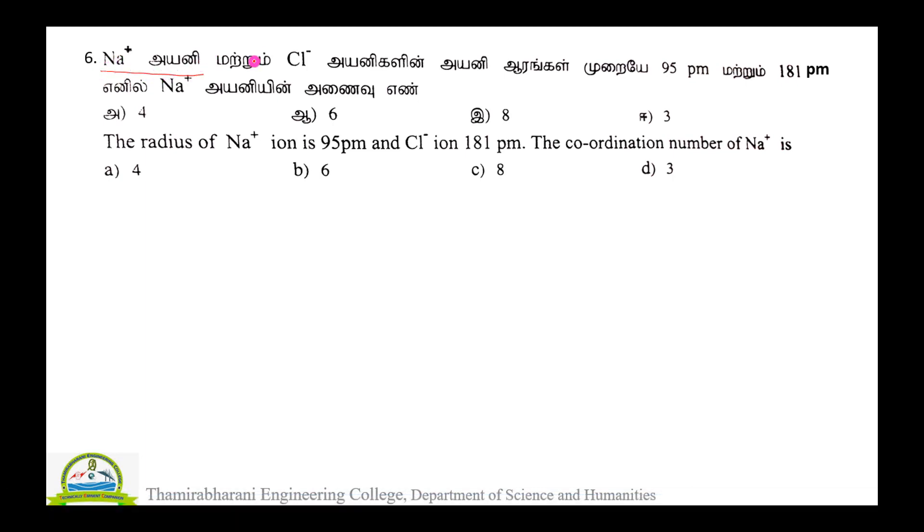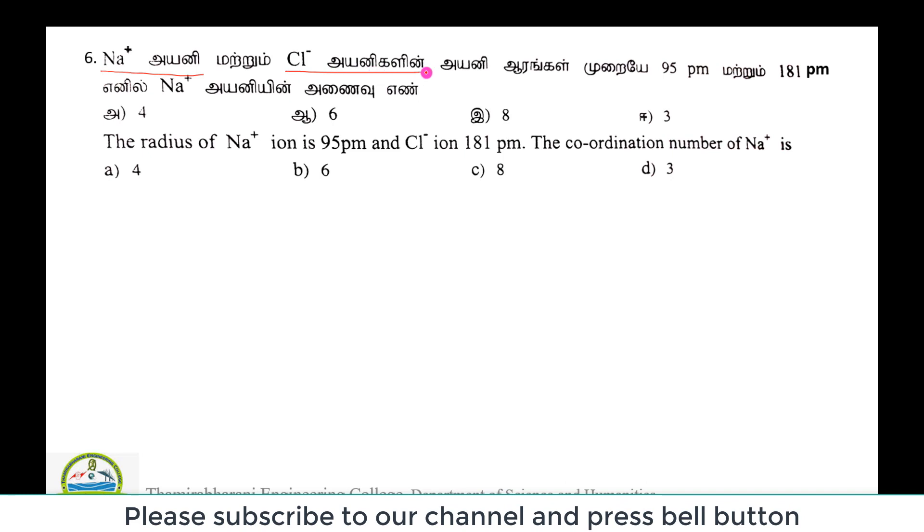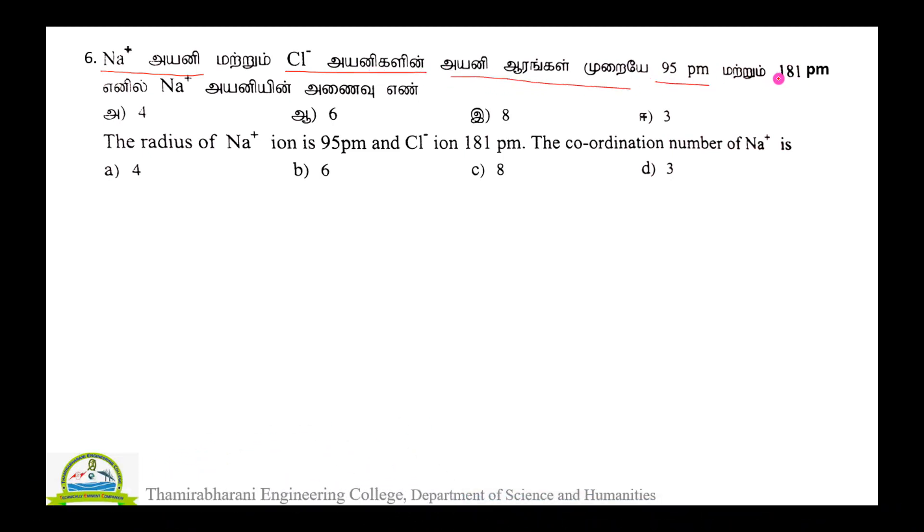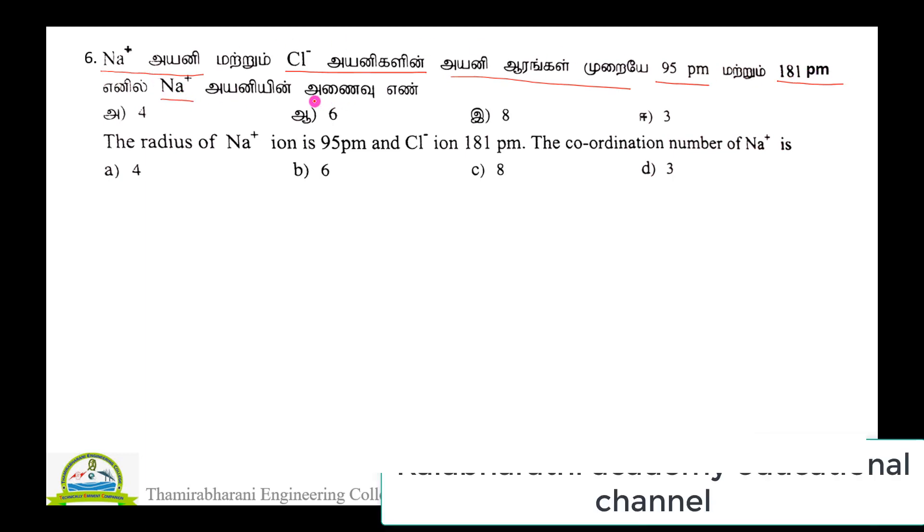Na+ ion and Cl- ion radii are given. 95 picometer and 181 picometer. For Na+ ion.